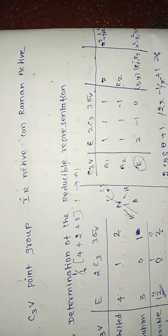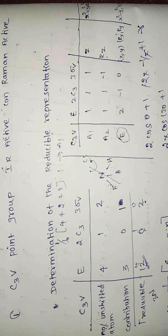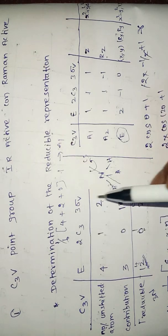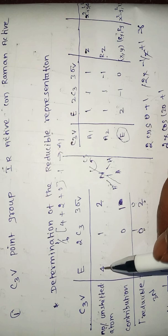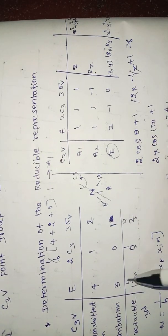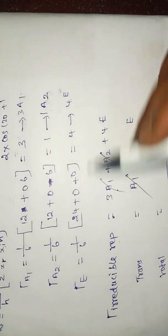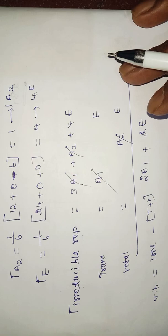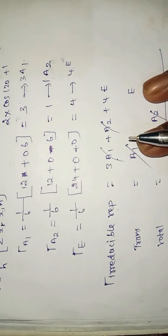This completes the C3V point group analysis. We have determined the IR-active and Raman-active modes, including polarization and degeneracy. The unshifted atoms for E = 4, C3 = 0 (contribution 0), and σv = 2 (contribution 1). The reducible representation gives us the vibrational modes. Thank you — in the next video we will look at more examples.